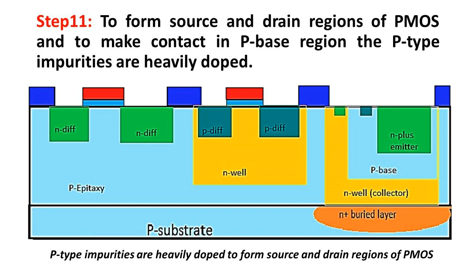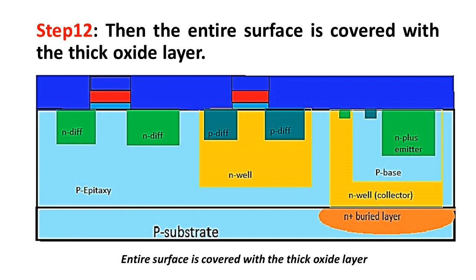Step 12: Then the entire surface is covered with the thick oxide layer. Step 13: Through the thick oxide layer, the cuts are patterned to form the metal contacts.